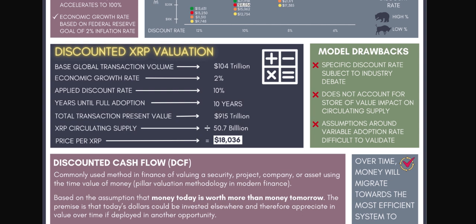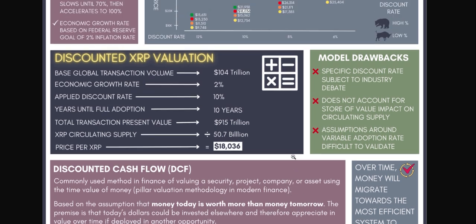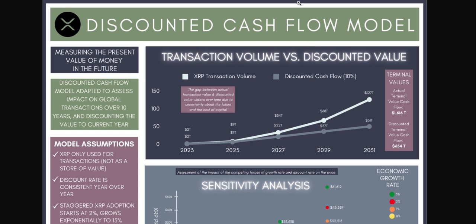This $18,000 figure is going to be one of our lower limits because it does not take into account moving money outside of GDP — meaning other assets that aren't part of that calculation — and it also does not address any store of value. There's a description at the bottom of the infographic about what Discounted Cash Flow is, which I'll put in the description for your convenience.